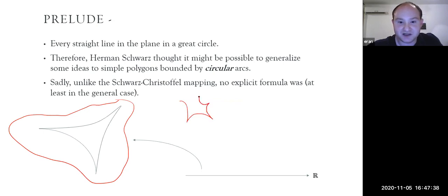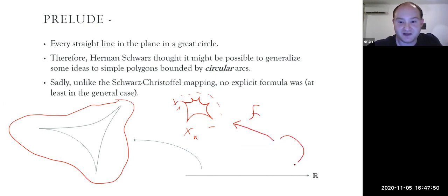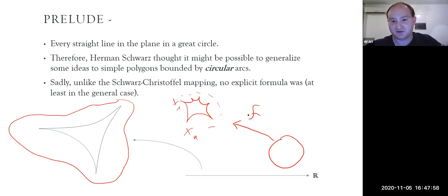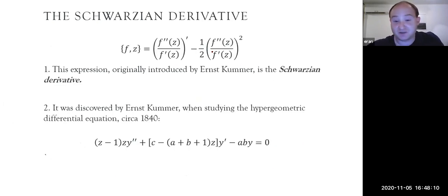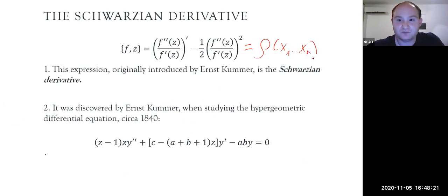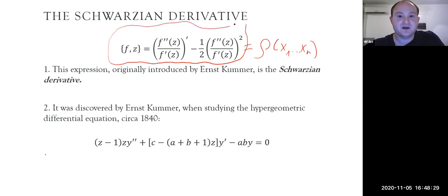Sadly it failed. However, what Hermann Schwarz did manage to prove was the following: assume we have some polygon bounded by circular arcs with vertices x₁ to xₙ, and let f denote a conformal diffeomorphism from the disk to that polygon, satisfying some normality condition. Then an expression in the derivatives of f can be described as a function of the vertices. This expression is referred to as the Schwarzian derivative, and this would be the focus of this talk.